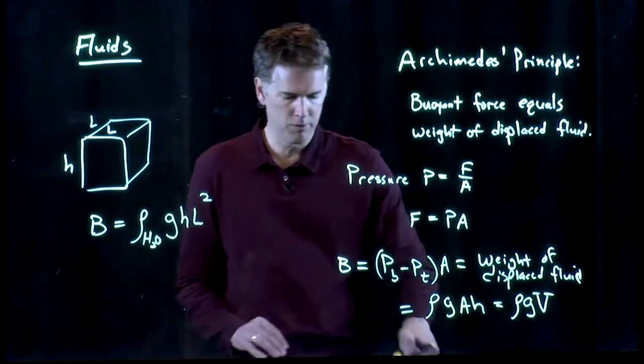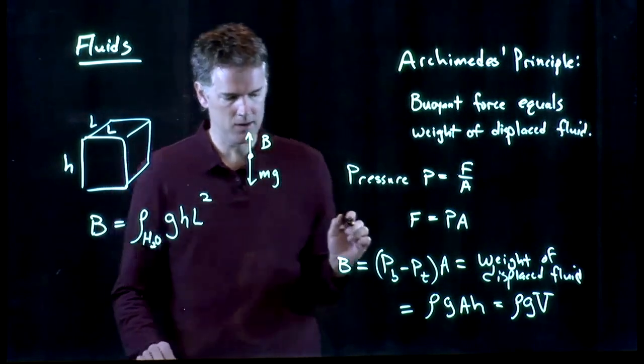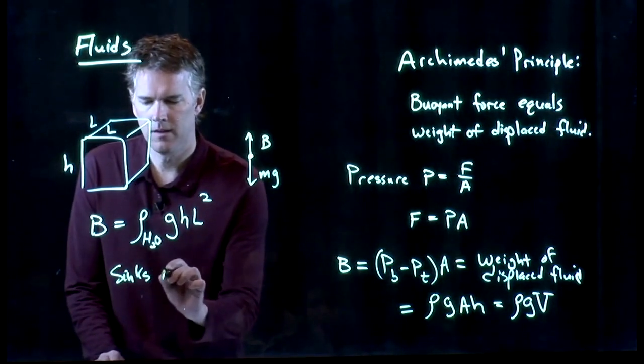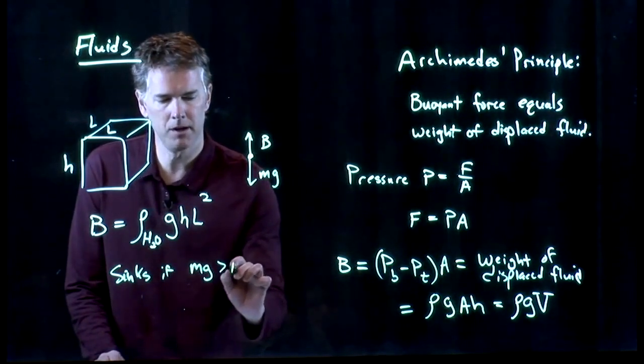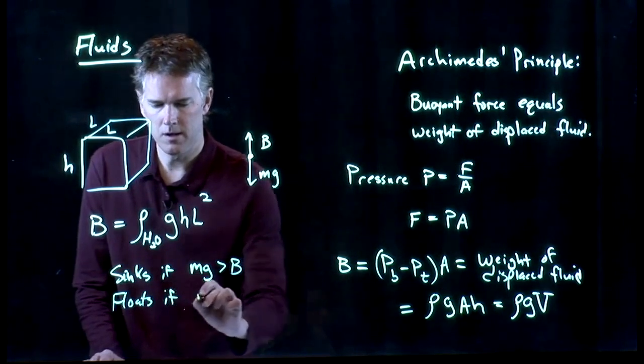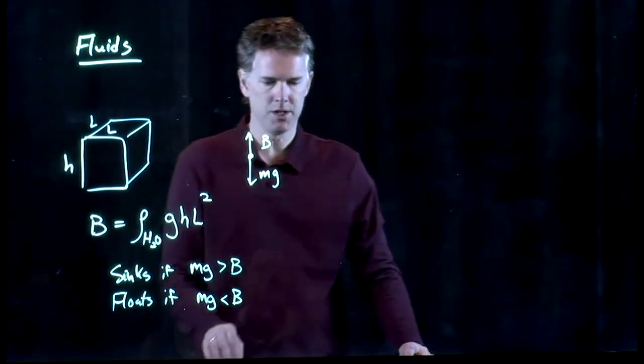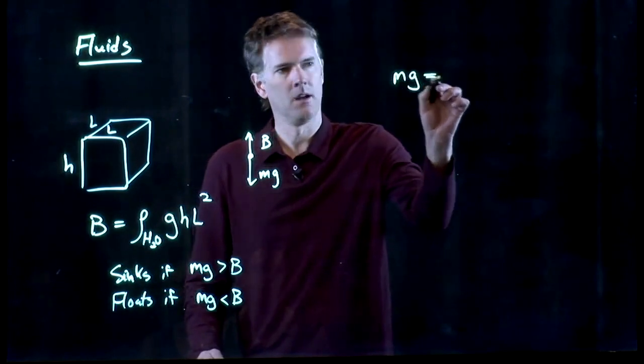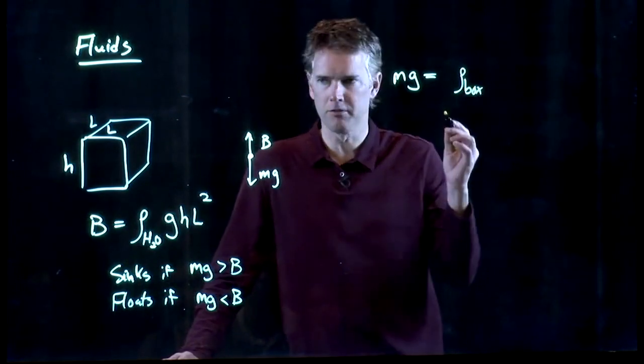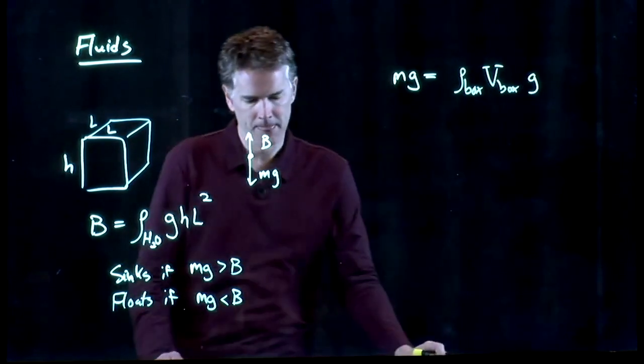Well, we've got the buoyant force going up. We have MG going down, and we know that it's going to sink if that force down is bigger than B. And it's going to float if that force down is less than B. Let's think about this MG for a second. MG is the weight of the box. And so, it is the density of whatever that stuff is made of times the volume of the box times G.